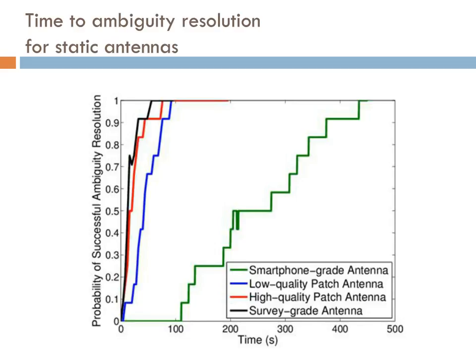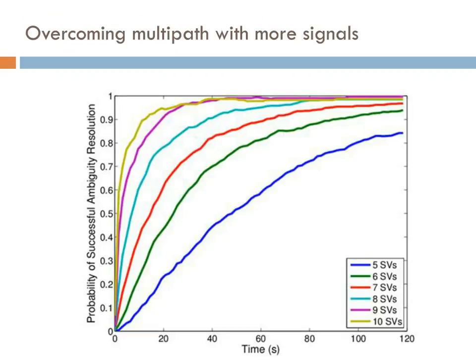Similar traces for the other three antenna types, also tracking seven satellites, show that higher-quality antennas give shorter times to ambiguity resolution as they better combat multipath. One mitigation approach is to track more signals. Every additional satellite decreases the time to get to 90%. Our analysis shows that if we could track 15 or more satellites using the smartphone antenna, the time-to-ambiguity resolution could be brought to under 30 seconds. We would need multiple frequencies or multiple GNSS constellations to get to 15 signals — GPS L1 alone is not enough.